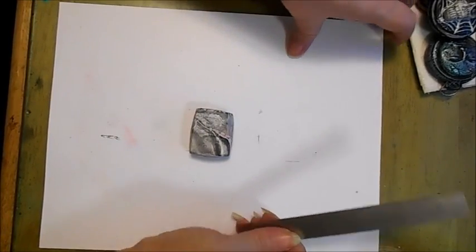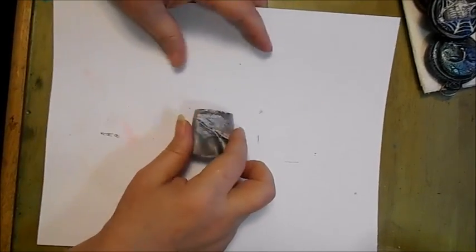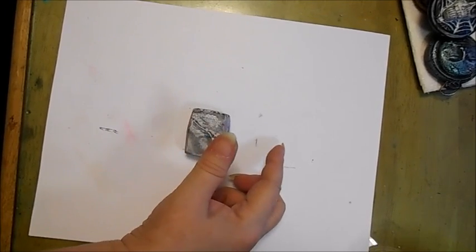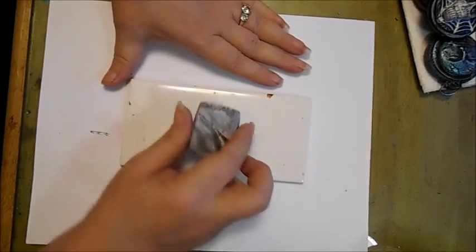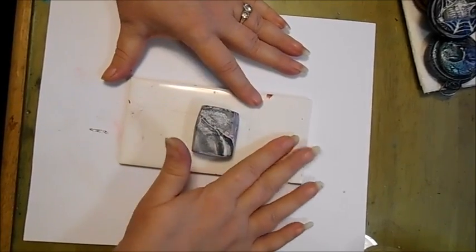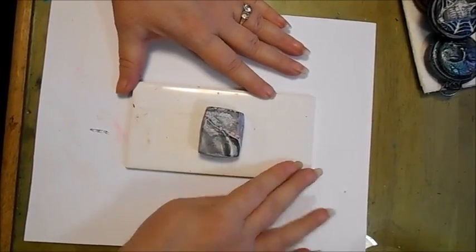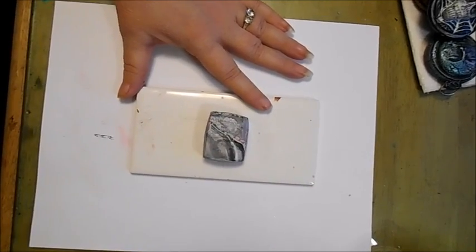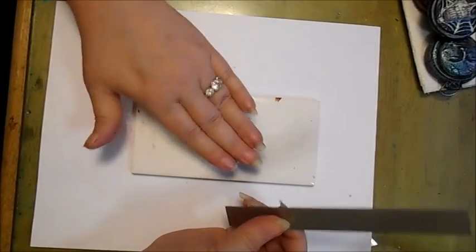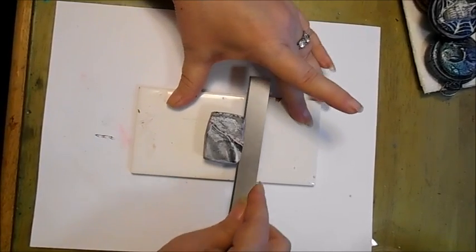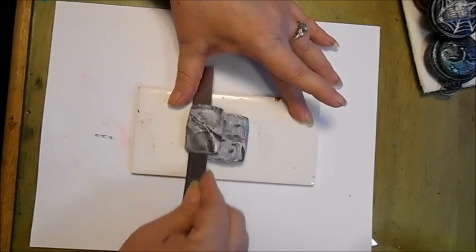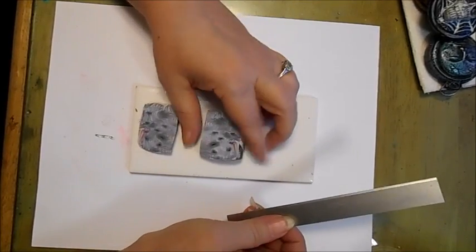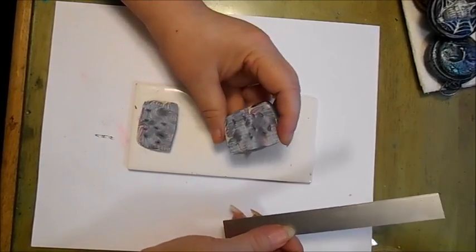I'm going to take this off the paper. How about I stick it on a ceramic tile. This is just a ceramic tile like you would use in your kitchen, in your bathroom. Alright, I've got it stuck down. I'm just going to use my blade. And I'm going to cut down at an angle.